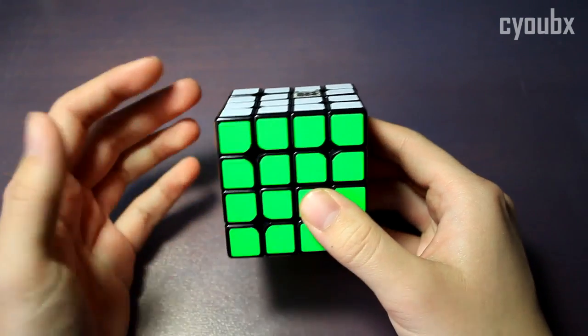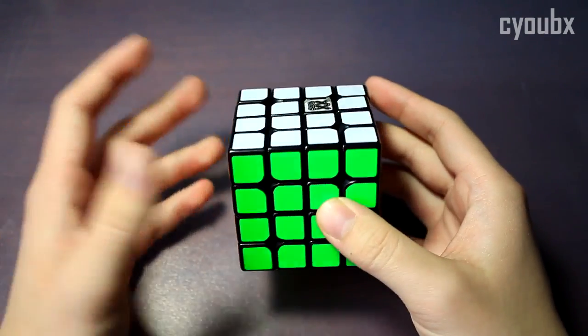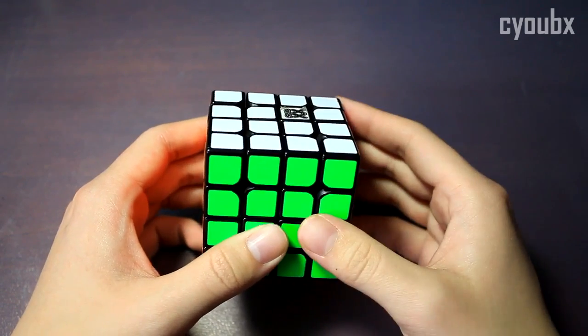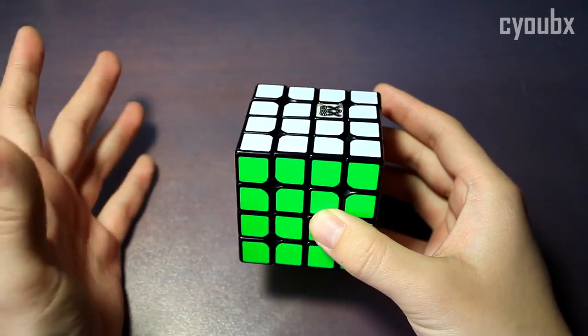If you've done any sort of edge pairing method on 4x4, whether it's with Yao or reduction, I think it'll be pretty clear what I'm doing. If you need more help, obviously that's what the comment section is for and I can try to explain through the comments.